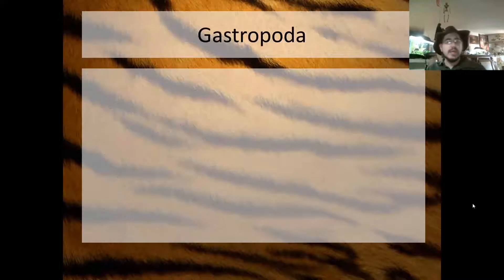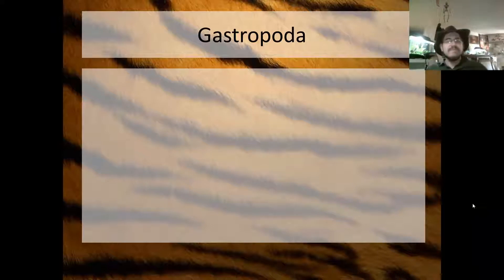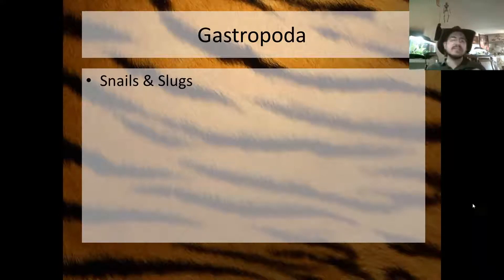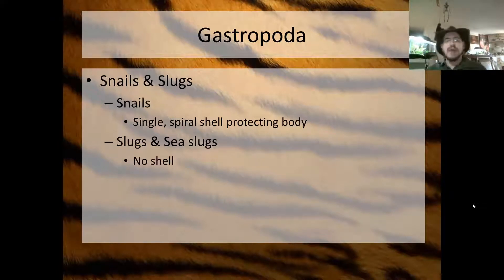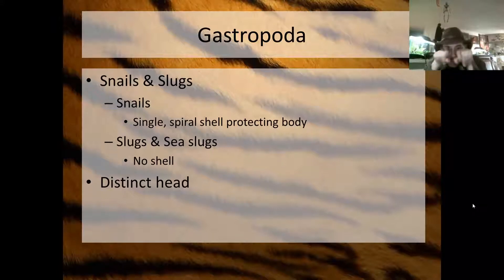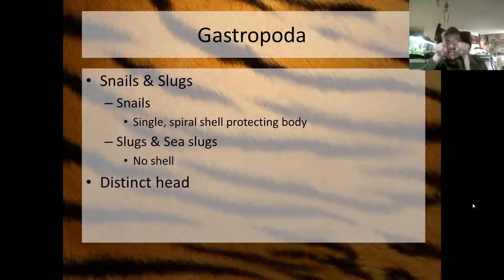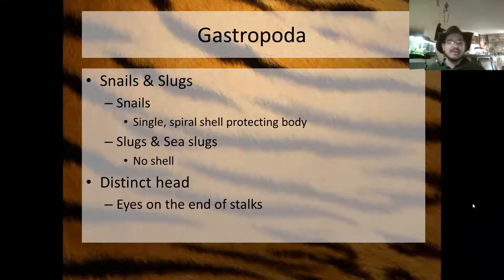Let's look at class Gastropoda — Phylum Mollusca, Class Gastropoda. Gastropoda consists of the snails and the slugs. Snails have a single spiral shell protecting the body, while slugs and sea slugs do not have a shell. Gastropods have a distinct head, usually with two to four to six eye stalks sensing the environment around them, with eyes on the end of those little stalks.